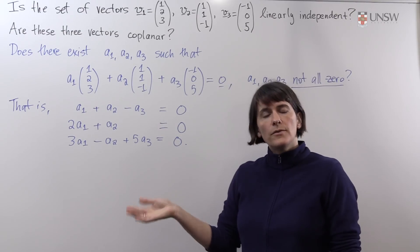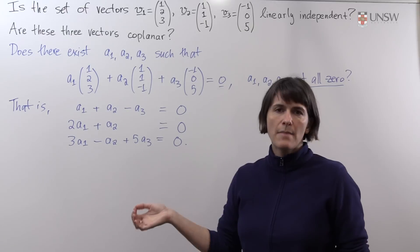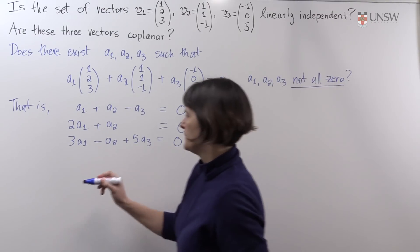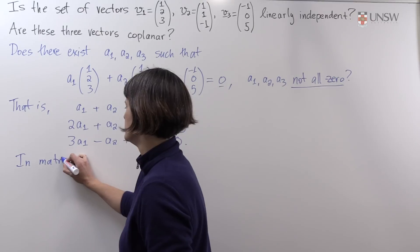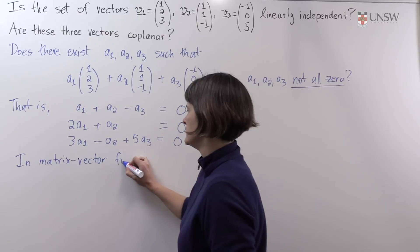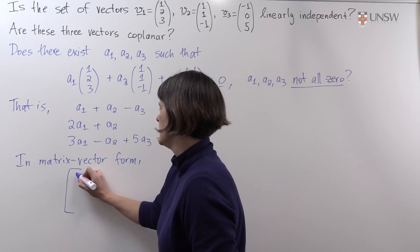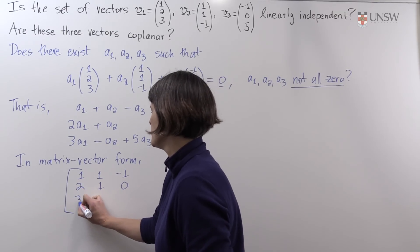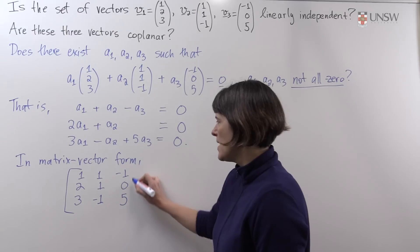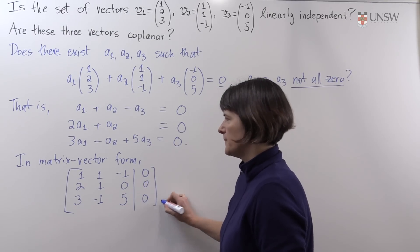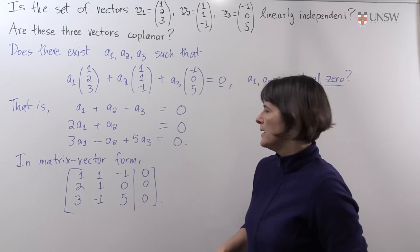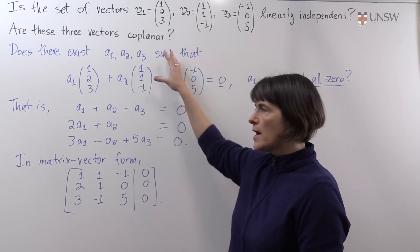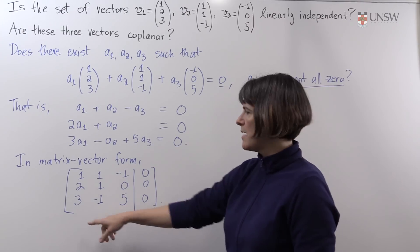Okay, now we have a system of three linear equations in three unknowns. We're going to solve it using matrix methods. So we'll set up our matrix, write this in matrix vector form. We want to solve [1, 1, minus 1; 2, 1, 0; 3, minus 1, 5]. And the right-hand side, I'll put it in for now, is 0, 0, 0. And we can solve this using row reduction. However, any row operations we do will not affect this right-hand side. It will always stay 0, 0, 0. So when I write it out again at the top of the board, I'm just going to leave this right-hand side off and we'll focus on the left-hand side matrix.